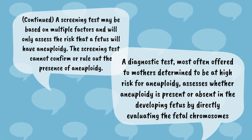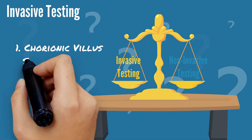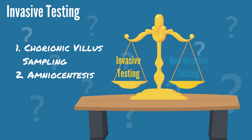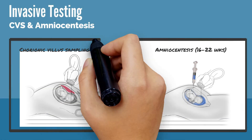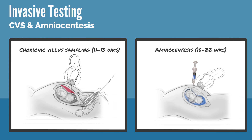A diagnostic test, most often offered to mothers determined to be at high risk for aneuploidy, assesses whether aneuploidy is present or absent in the developing fetus by directly evaluating the fetal chromosomes. After an abnormal noninvasive test result, or in patients who desire a definitive diagnosis, the options for prenatal diagnostic testing include invasive methods: chorionic villi sampling (CVS) and amniocentesis. CVS is generally performed between the 11th and the end of the 13th week, or amniocentesis done between weeks 16 to 22. These tests allow for the evaluation of actual DNA structures and give a definitive diagnosis. They can also allow for evaluation of translocations and screening for specific gene sequences or mutations.